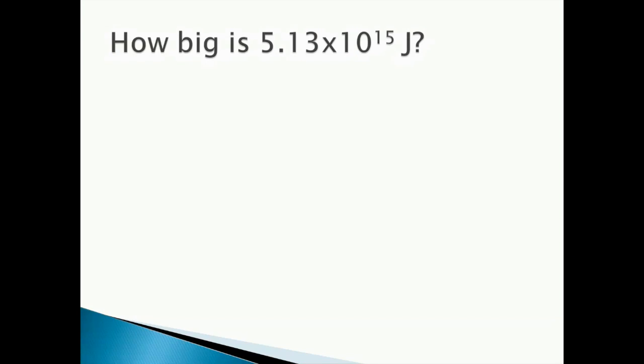5.13 times 10 to the 15 is obviously a large number, but just how big is it? Let's give some examples to appreciate the scale of this much energy. The atomic bombs used in World War II have an approximate energy output of 6.7 times 10 to the 13 joules. This means that the atomic bombs used in World War II had 76 times less energy than the energy in Ohio's annual rainfall.